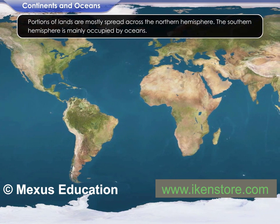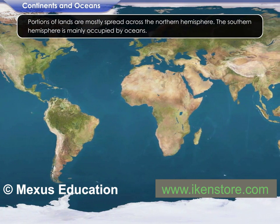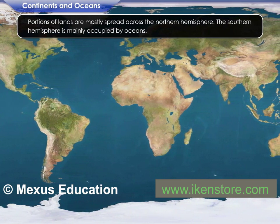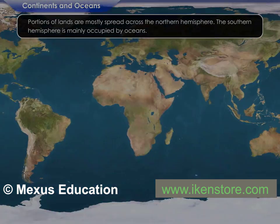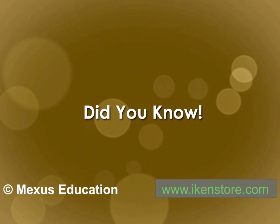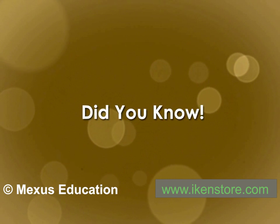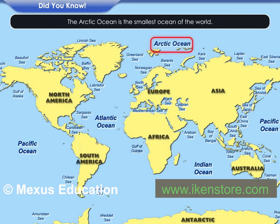Portions of land are mostly spread across the Northern Hemisphere. The Southern Hemisphere is mainly occupied by oceans. The Pacific Ocean is the largest and the deepest ocean of the world. The Arctic Ocean is the smallest ocean of the world.